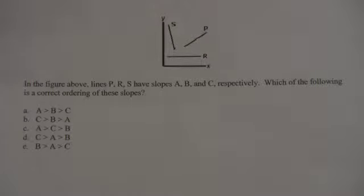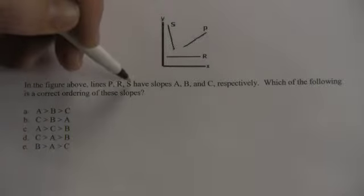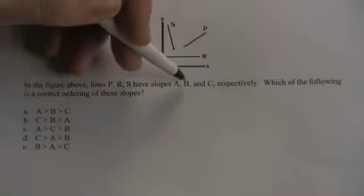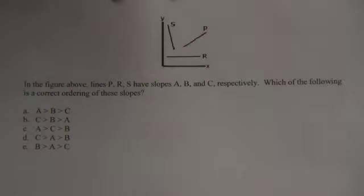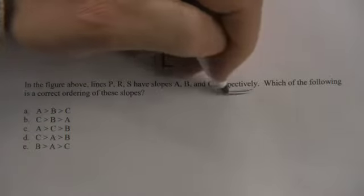One thing that confuses people is it says lines P, R, and S have slopes A, B, and C respectively. Respectively just means in that order.